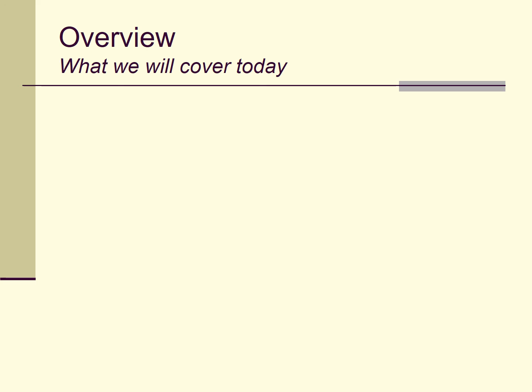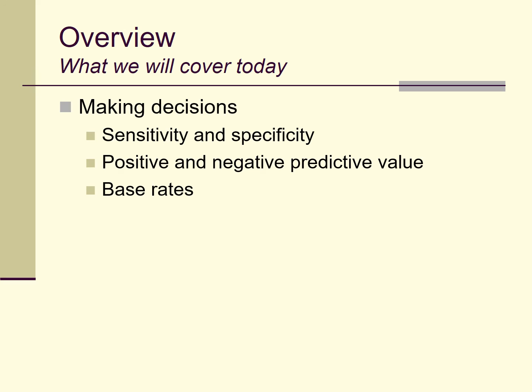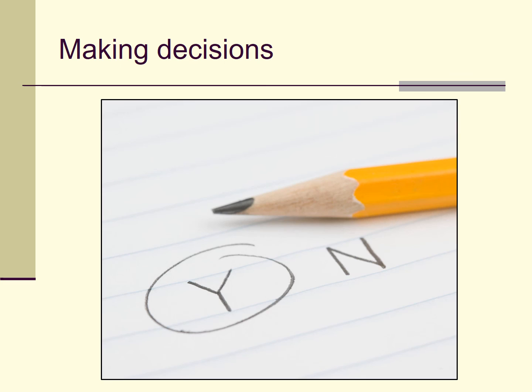I'm going to focus on calculations like sensitivity and specificity, which you've almost certainly heard of before, but which, like most people, you may be a little bit confused about. We'll also talk about positive and negative predictive value, which are similar but somewhat different calculations. Then we'll talk about how base rates of a phenomenon can influence the interpretations you make when calculating things like sensitivity, specificity, positive and negative predictive value, and so on.